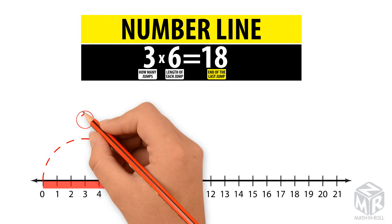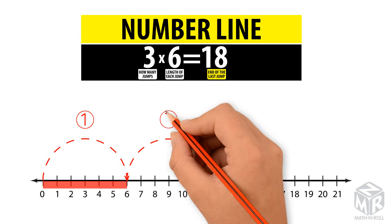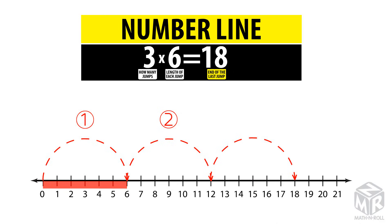We start from zero and count by six. We make three jumps and draw arrows to represent each jump. The product is the number we get to at the end of our last jump. So three times six equals 18.